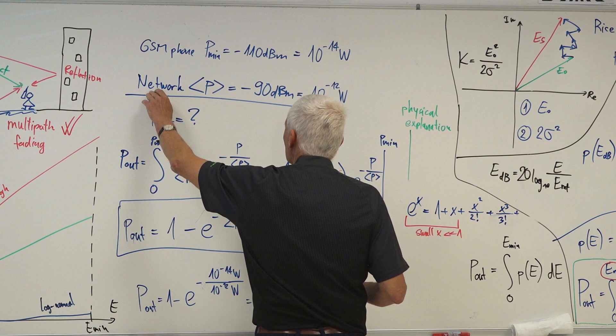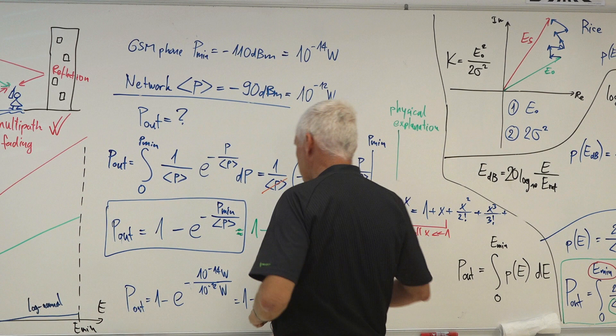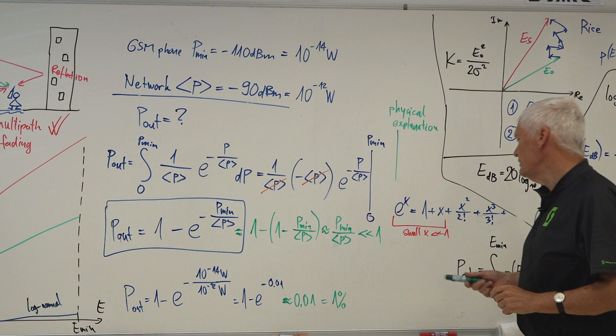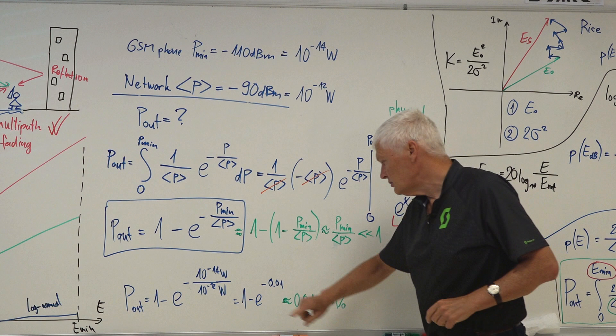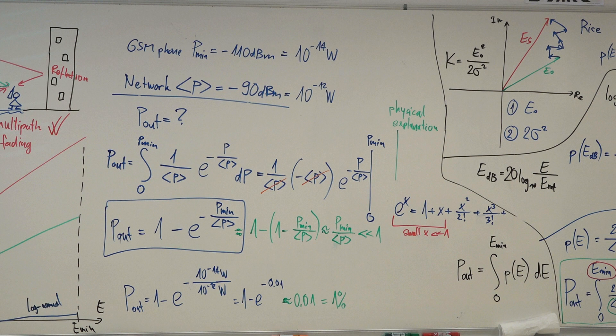This is how to use the Rayleigh distribution in practice. We look at the phone's sensitivity, what the network provides, convert all quantities to watts to plug into the equation, and use the small-argument approximation for the exponential. It's very easy to calculate.